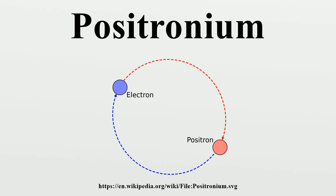Positronium is a system consisting of an electron and its antiparticle, a positron, bound together into an exotic atom, specifically an onium.